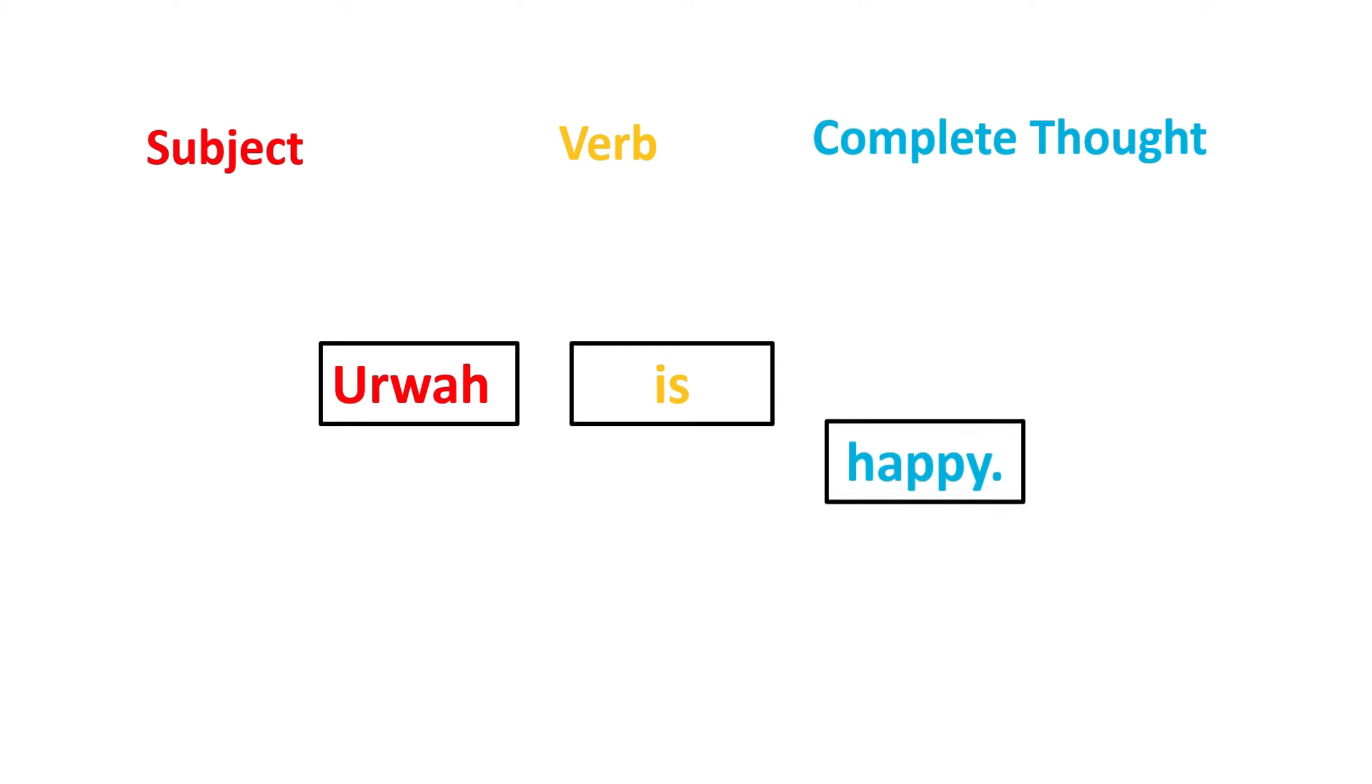When we add happy and say Urwa is happy, this is now a complete simple sentence. Because we have a subject, which is Urwa, we have the verb, which is is, and happy makes it a complete thought.